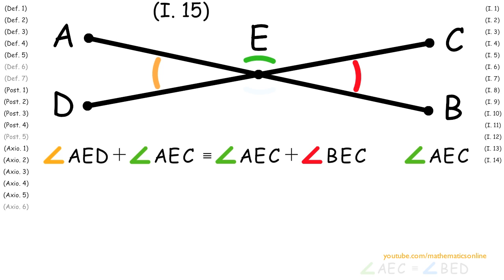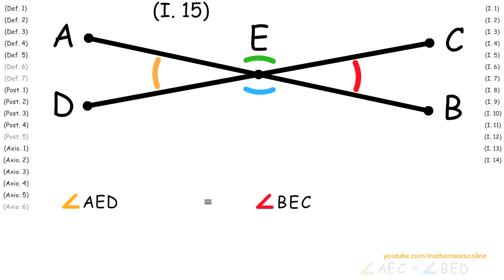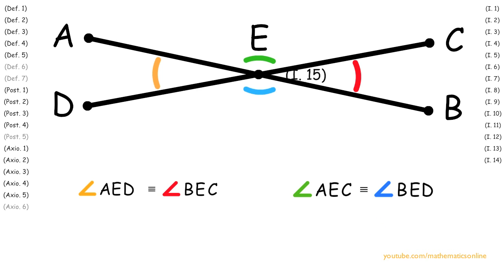Now, with angle AEC, we apply Axiom 3 to show that angle AED plus angle AEC minus angle AEC is congruent to angle AEC plus angle BEC minus angle AEC. And what this turns out to be is angle AED is congruent to angle BEC. And therefore, we have proven that the vertical angles are congruent to each other.